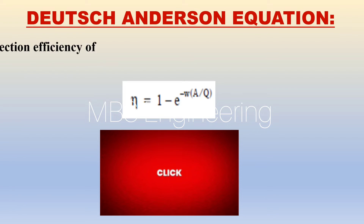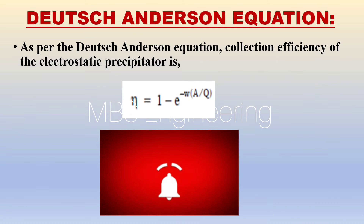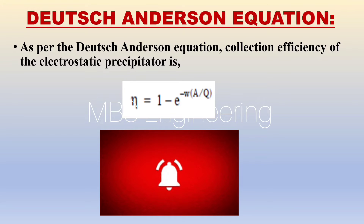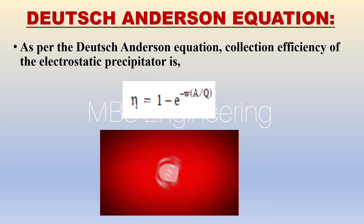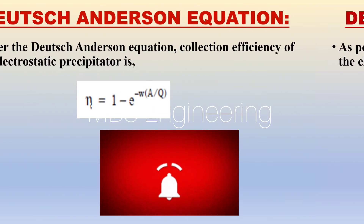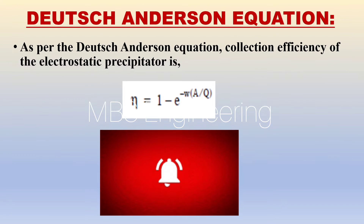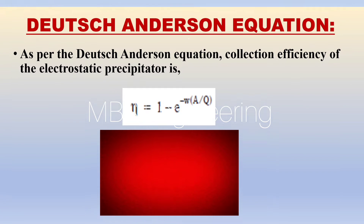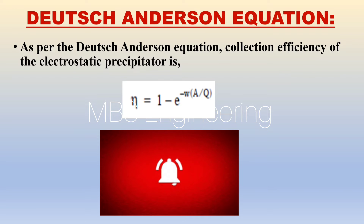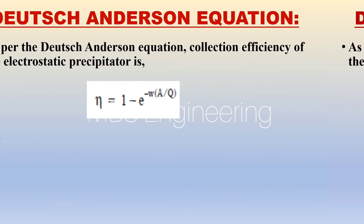Next, we are going to understand the Deutsch-Anderson equation and how it is used to calculate the collection efficiency of the electrostatic precipitator, ESP. As per the Deutsch-Anderson equation, the collection efficiency of the electrostatic precipitator is: ETH equals 1 minus e to the power of migration velocity multiplied by effective collecting plate area divided by gas flow through the electrostatic precipitator.